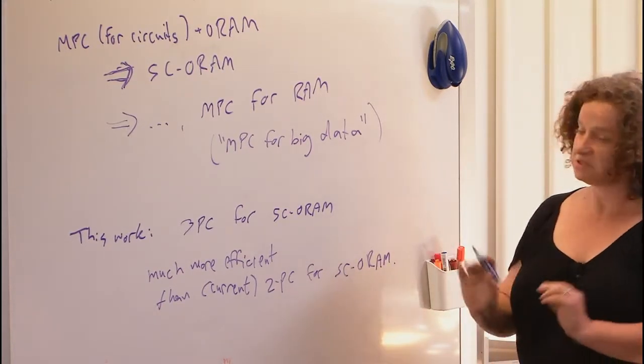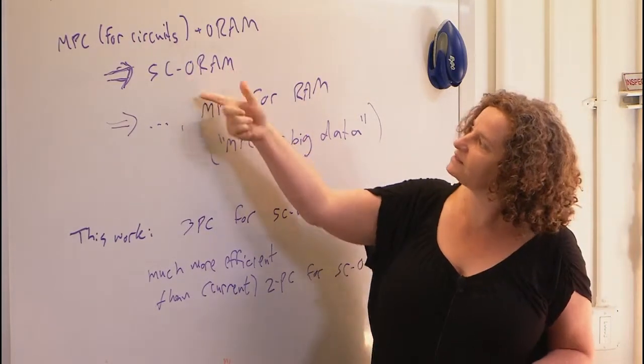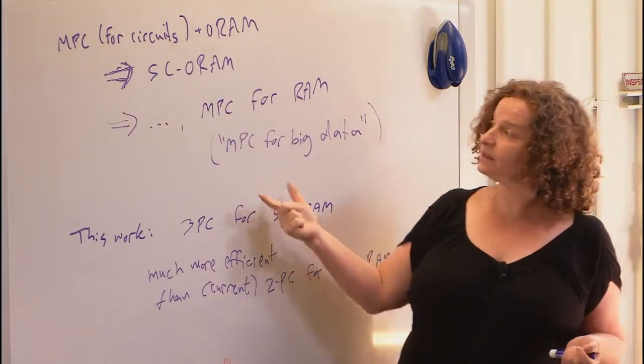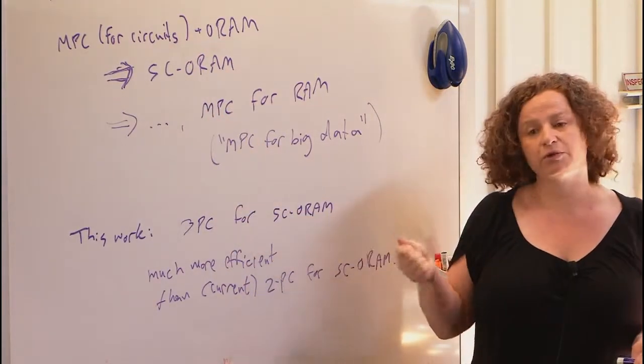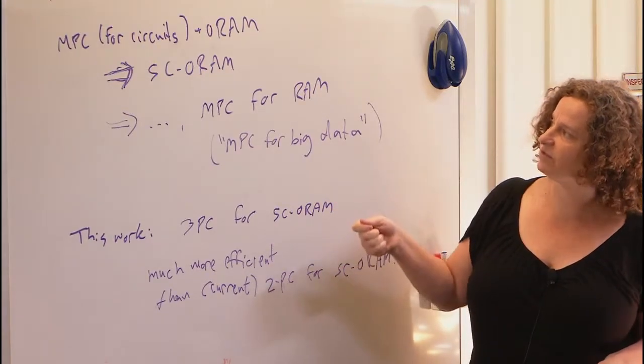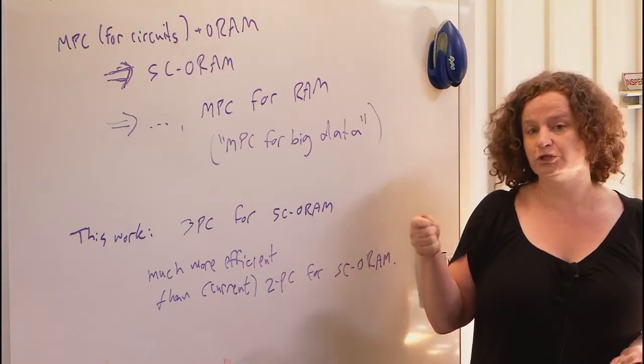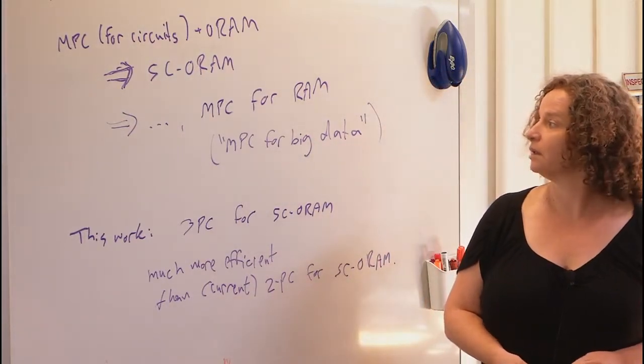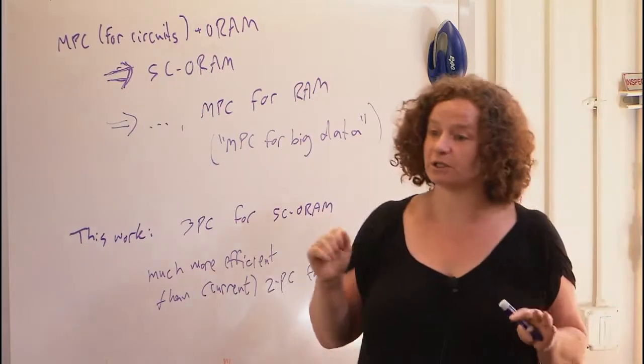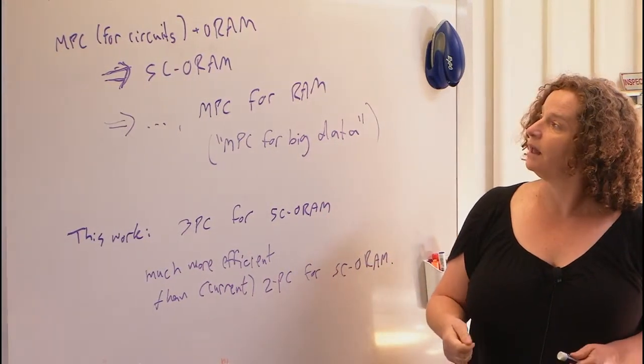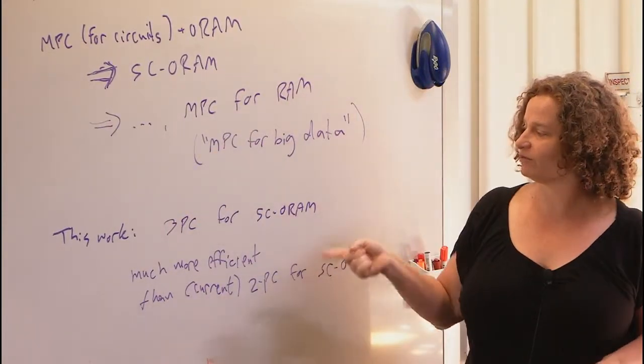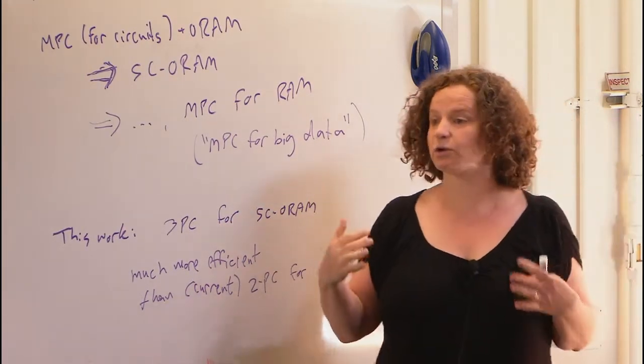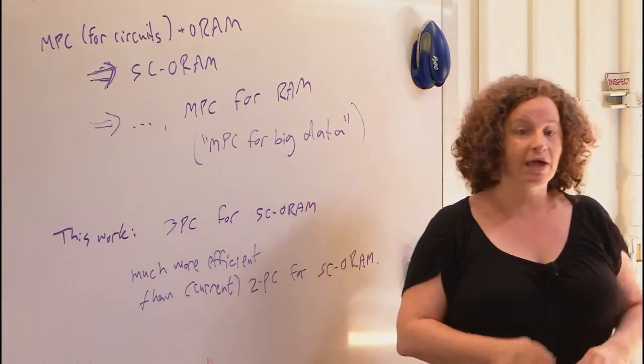So what is done in this work? All previous works that focused on practical efficiency did this part via secure two-party computation. This work does it for three-party computation, three-PC for SCORAM. And the point is it's much more efficient or practically efficient than at least the current known two-PC for ORAM.